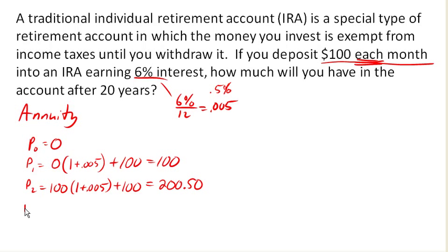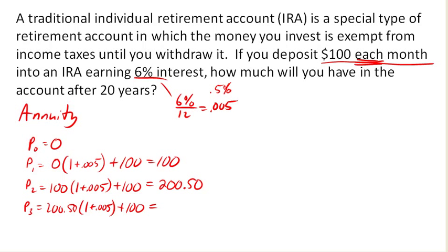So we end up with $200.50 because we've earned some interest on that first deposit. In the next month, we're going to earn interest on that $200.50 and deposit another $100 — earning even a little bit more interest. So now I have roughly $301.50 in the account. You'll notice that I'm going to earn more interest as I deposit more into the account.